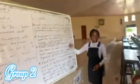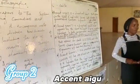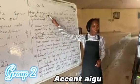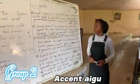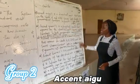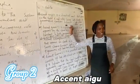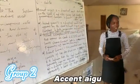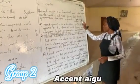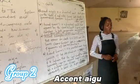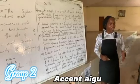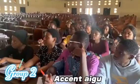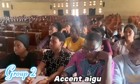The accent aigu is a diacritical mark that appears on the vowel E and changes the sound E to É. This serves both phonetic and grammatical functions in French. Examples of words where you can find the accent aigu are café and allée, which means 'gone' in English. A student also gave the example of élèves, which means students. Thank you very much.